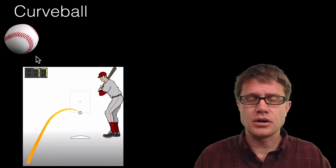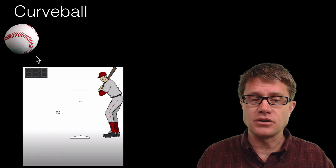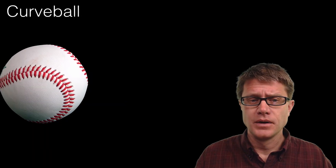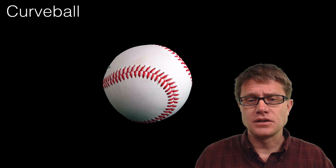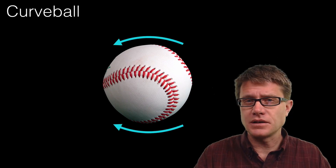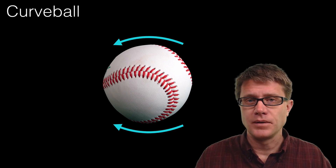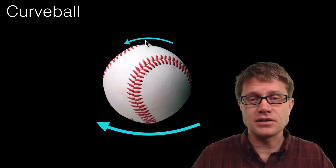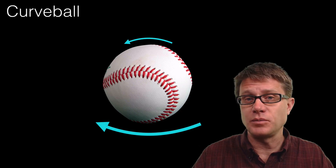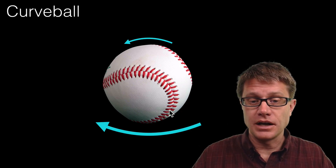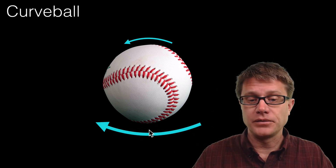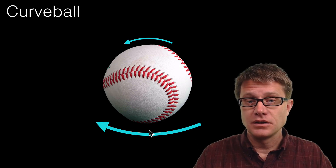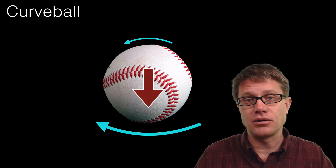We can also use Bernoulli's equation to analyze the curveball in baseball. When you throw a curveball, the ball spins. The spin generates airflow on the top that counteracts the oncoming wind, decreasing the speed of air on top. On the bottom, the spin-generated airflow and the oncoming wind both go in the same direction, making the air on the bottom move faster. By Bernoulli's equation, faster fluid means lower pressure. Since there is lower pressure on the bottom, there is a net force pushing the ball downward — that is how a curveball curves.